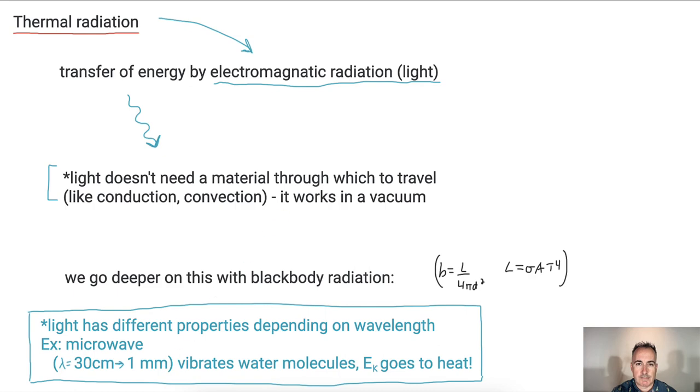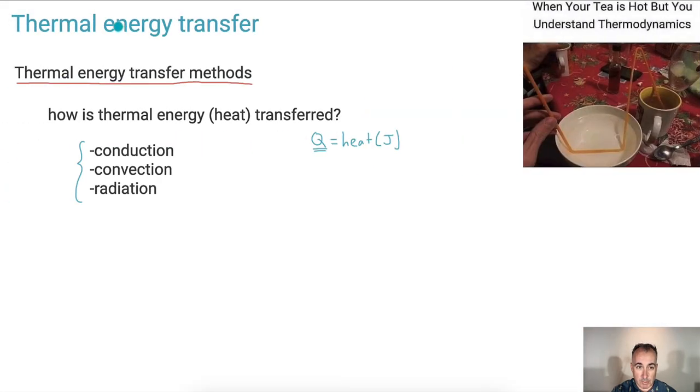So what have we seen? There's three main types of thermal energy transfer. Conduction, where there's without bulk movement of particles. Convection, where there is bulk movement. And radiation, when it's just coming from light.